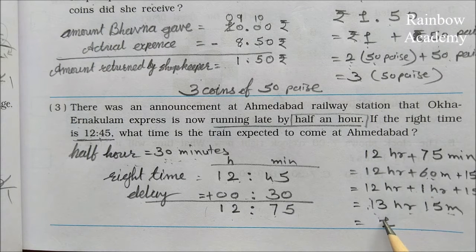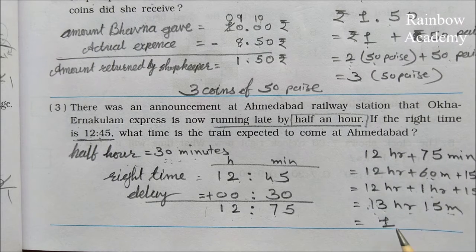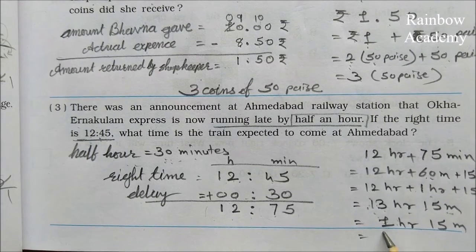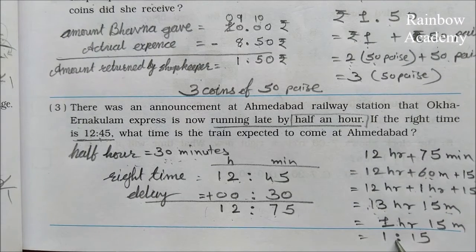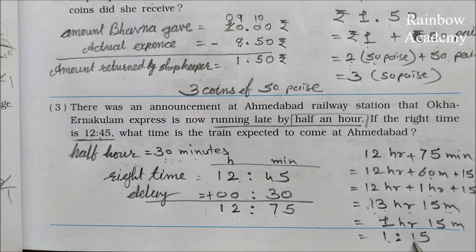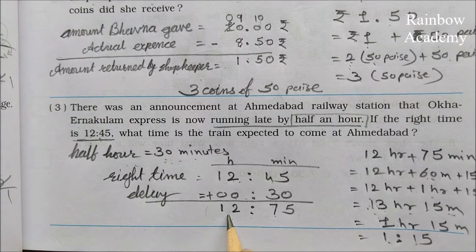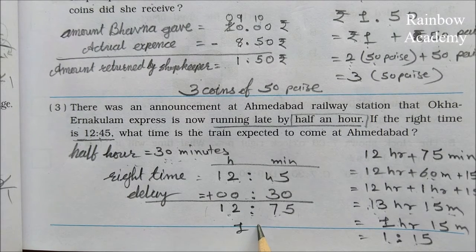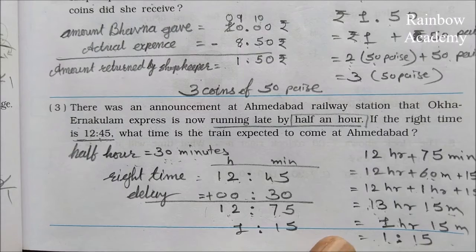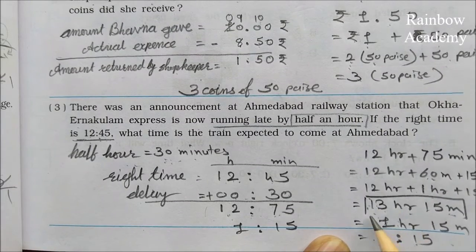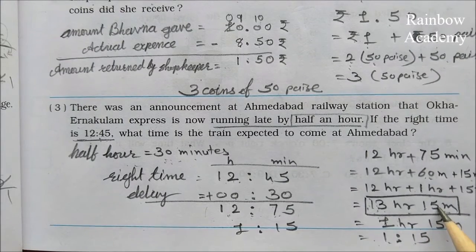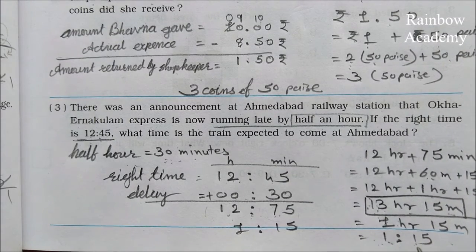We will write 13 hours 15 minutes as the answer. If you want, we can also write it as 1 hour 15 minutes, since 13 means 12 plus 1, which is 1 PM. So we have two valid answers: 13 hours 15 minutes or 1 hour 15 minutes.